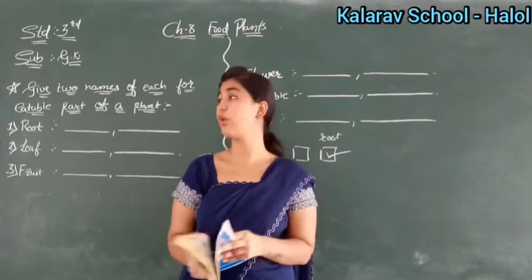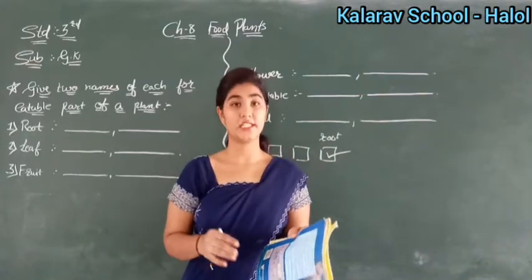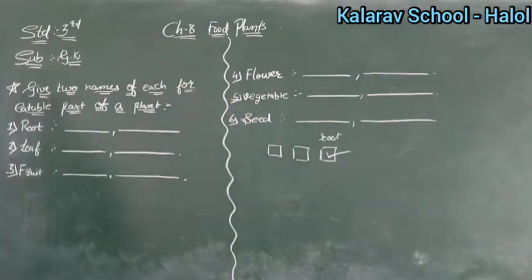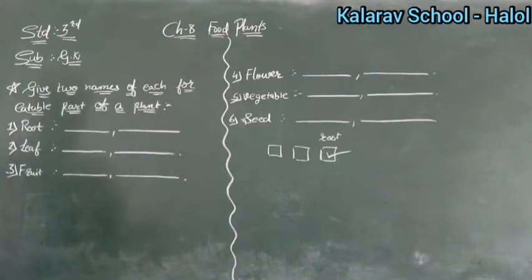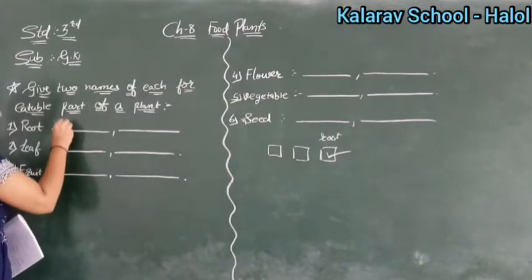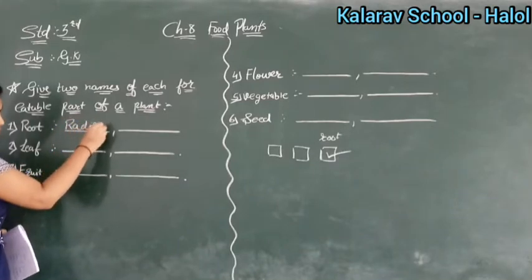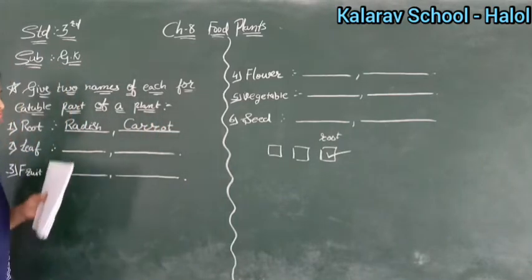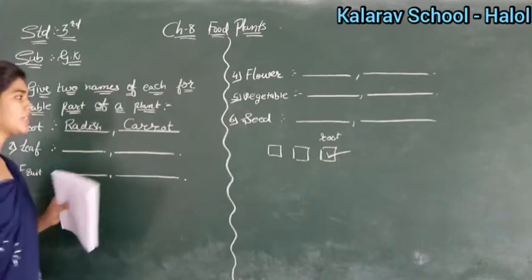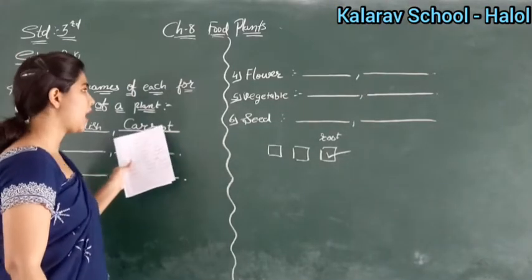So these answers you have to write — two names of each. Let's learn how to write two names for each. First one is root. Which vegetables or plants do we eat the root of? Radish and carrot. So here you will write radish and carrot. What is the spelling of radish? R-A-D-I-S-H. Radish. And second one is carrot: C-A-R-R-O-T. Carrot.